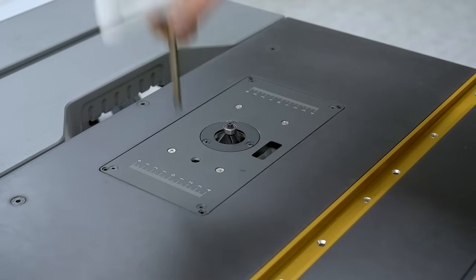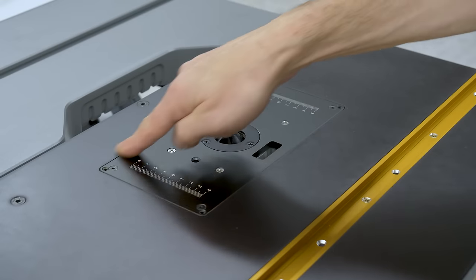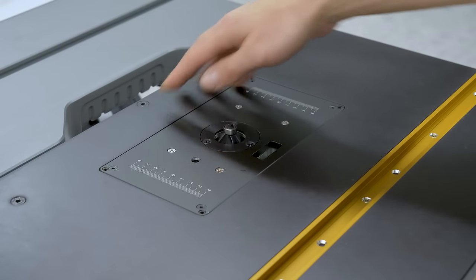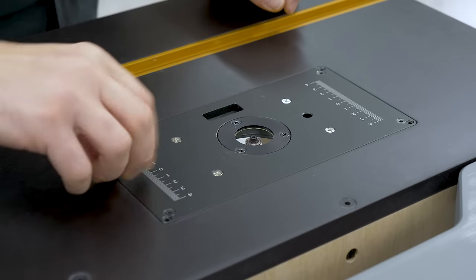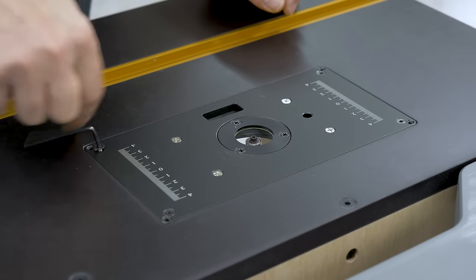You could, for example, install the router in the center of the work table and ditch the miter channel. The insert plate isn't indispensable either. You could use a piece of acrylic or the router base itself as an insert.